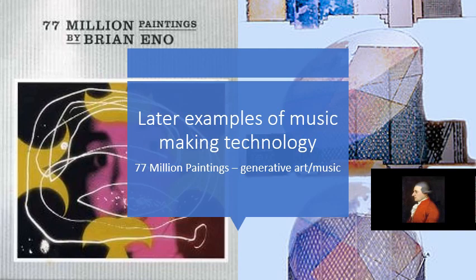Generative music and generative art have been around for quite a long time — there were musical dice games in the 1700s where composers would write snippets of phrases, you'd roll a die, and then assemble those snippets into a generative piece. The 77 Million Paintings is still available as a DVD and software you can run on your computer, though it's not very easy to find. It's a really interesting example.